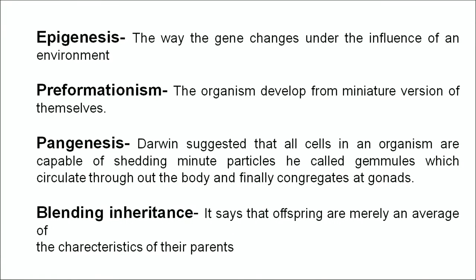Various theories were also proposed like epigenesis, preformationism, blending inheritance, and pangenesis. Epigenesis describes how genes change under the influence of an environment — for example, identical twins have the same genetic makeup but we can still find differences in them. Preformationism says organisms develop from a miniature version of themselves. According to pangenesis, Darwin suggested all cells shed minute particles called gemmules which congregate at the gonads. Blending inheritance says offspring are merely an average of their parents' characteristics. None of these theories hold true in present times.